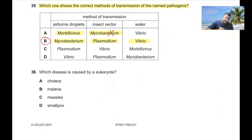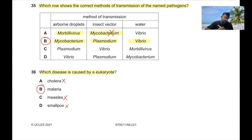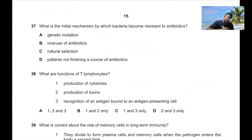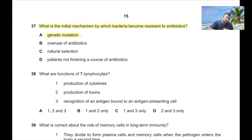Question 36: Which disease is caused by a eukaryote? A eukaryote is an organism with a nucleus. Cholera is caused by bacteria, measles and smallpox by viruses, but malaria is caused by Plasmodium, which is a protist and therefore a eukaryote. Question 37: What is the initial mechanism by which bacteria become resistant to antibiotics? There should be a gene mutation first. So 37A.